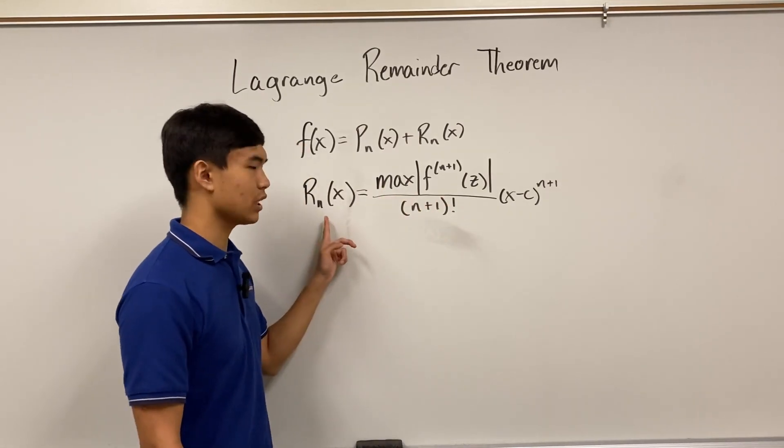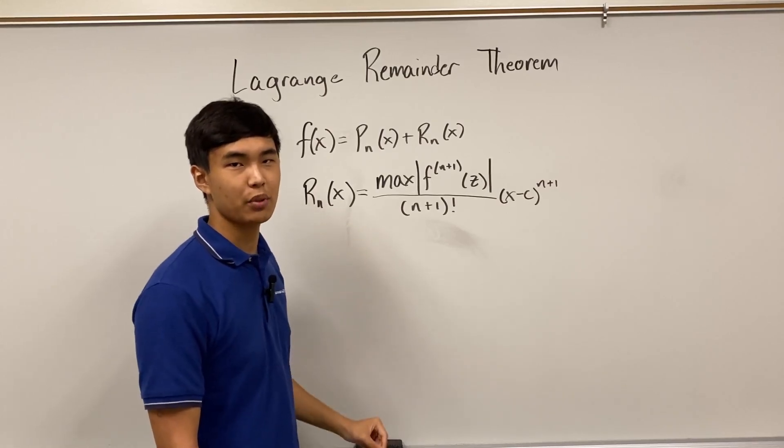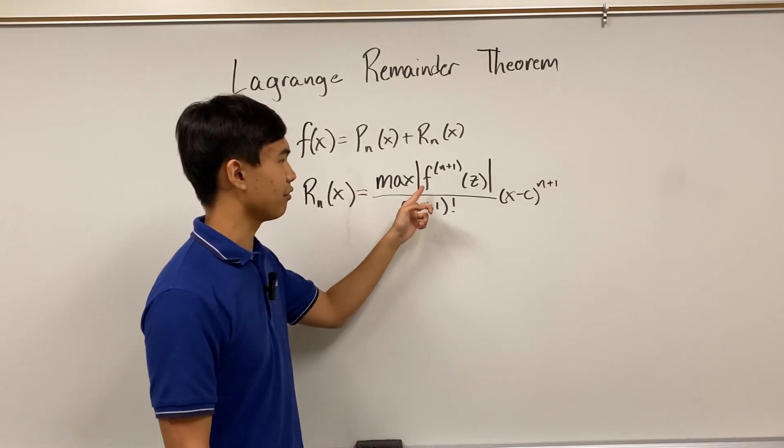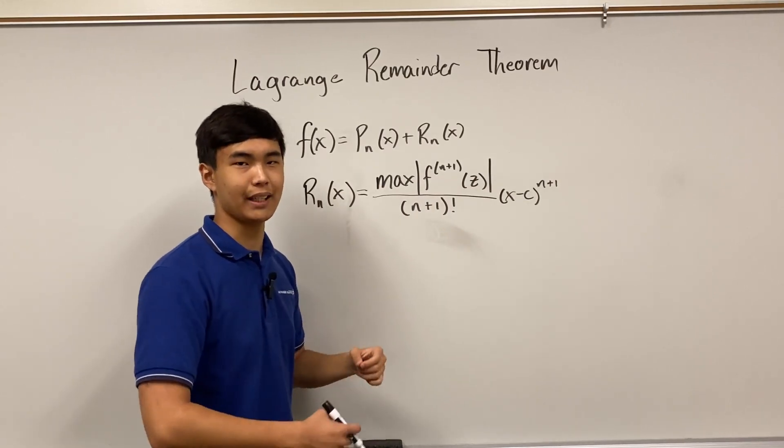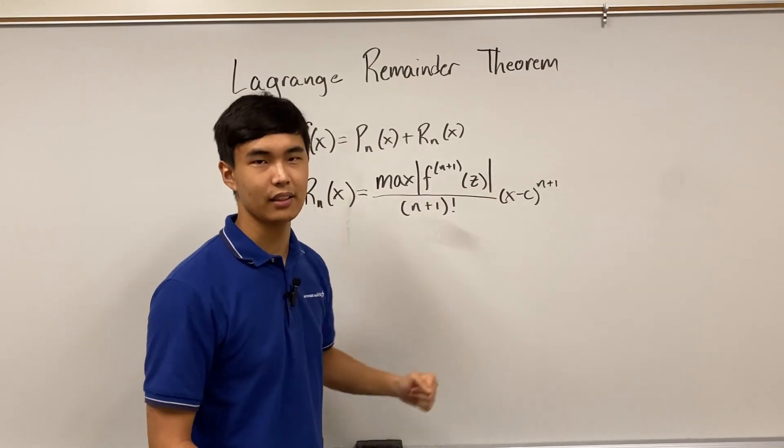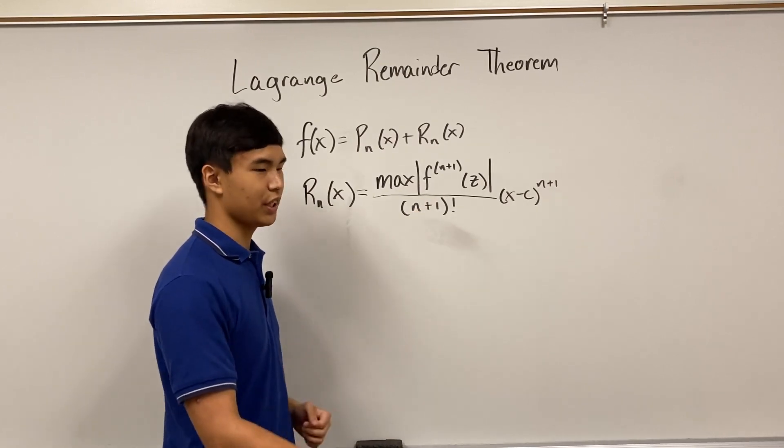And remember, we're trying to find the biggest possible error in the approximation. So that's why we have the maximum value of the derivative, which means the maximum change in the function that could happen as we get from x to c. And finally, this is where the value of z comes from.